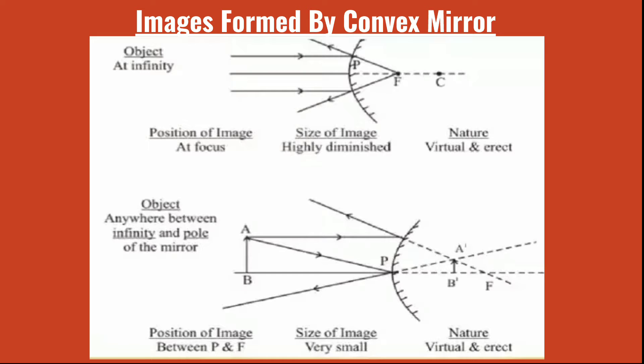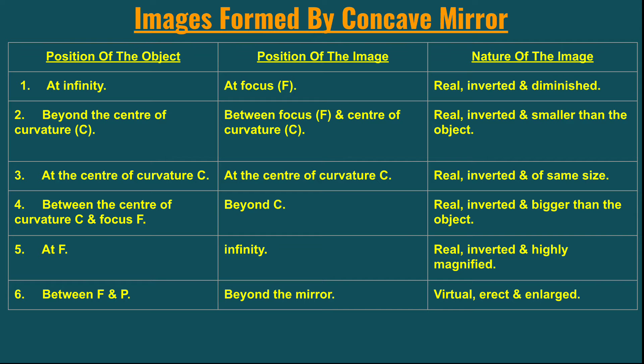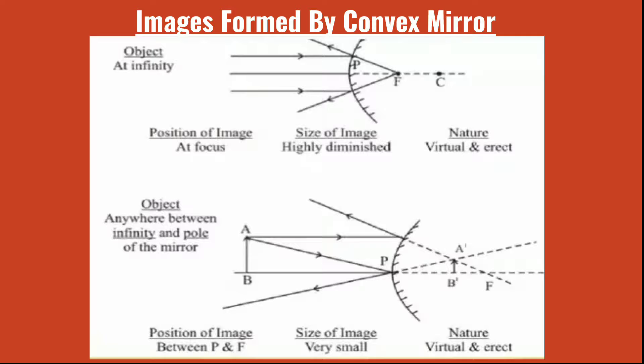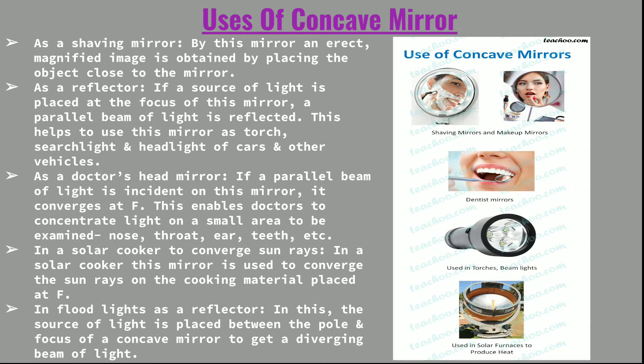The difference between the concave mirror and the convex mirror is that in the convex mirror, in all cases the images are erect and virtual, and always small in size — highly diminished in some cases and very small in others. All images are formed at the back of the mirror. In the case of the concave mirror, images are generally real and inverted, but can be diminished, the same size, larger, or even highly magnified, and can also be virtual, erect, and enlarged depending on the position of the object.